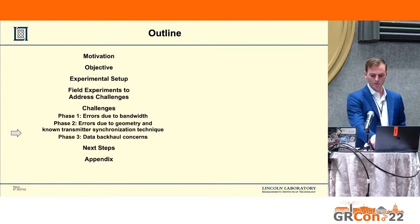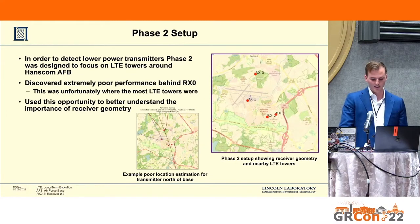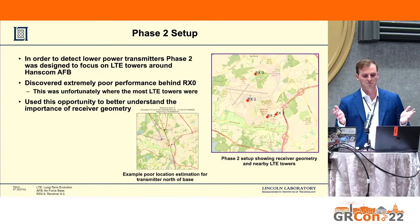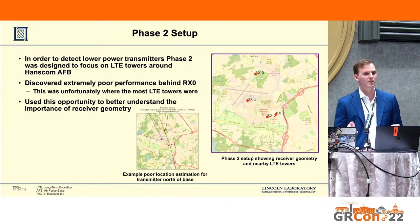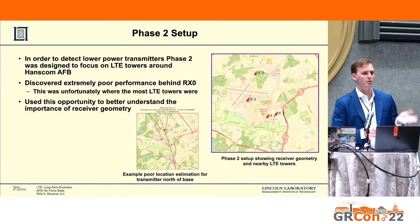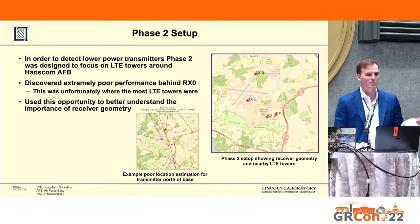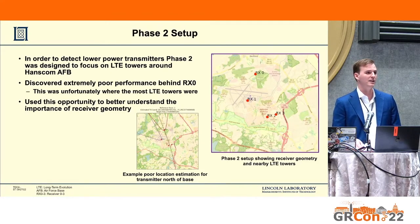Moving on to the second phase. We wanted to be able to detect lower power transmitters — prominently LTE stations or handheld devices. We set this up around Hanscom Air Force Base. Although our cross-correlations were looking really good with great peaks, we were still ending up with some bad location estimates, especially to the north. What we ultimately discovered is that something we initially didn't think would be a big problem — geometry — ended up being quite a significant issue. We decided to investigate the importance of receiver geometry and model it a little bit better.